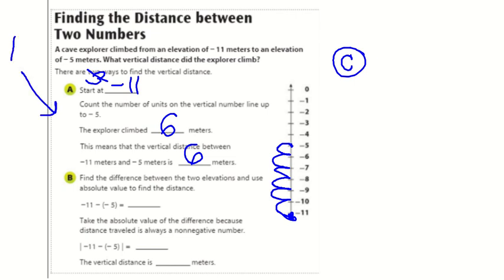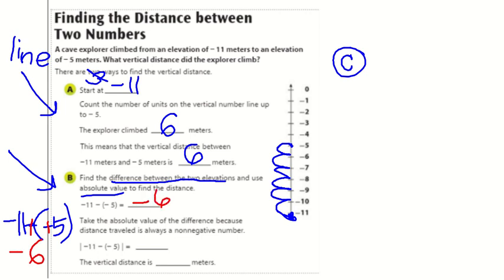Now the second way, using the number line. We're going to do option B, which is finding the difference between two elevations using absolute value. If I take negative 11 and subtract negative 5, that's finding the difference. Negative 11 minus negative 5. Don't forget you have to add the opposite. So I get negative 11 plus 5. I subtract and keep the sign of the greater number. That's negative 6. We went up six units, so how could we possibly get negative 6 here? That's why it says we need to take the absolute value of the difference because distance traveled is always a non-negative number. So you take the absolute value of negative 6, which is 6.